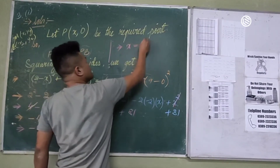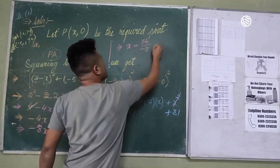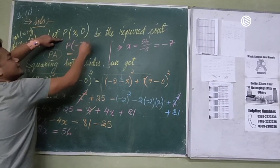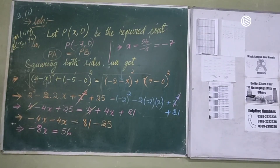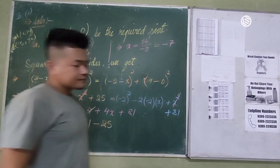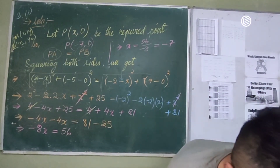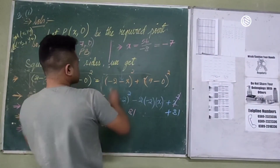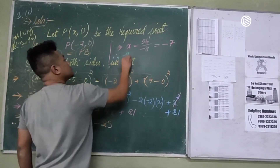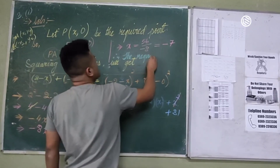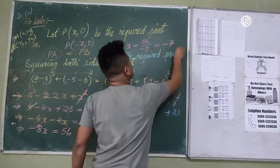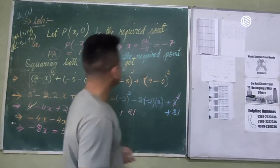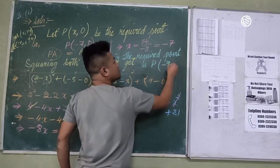X is equal to 56 divided by minus 8, which is minus 7. So we have P minus 7 is equal to 0. That's equal to 0. Therefore, the required point is P(−7, 0).